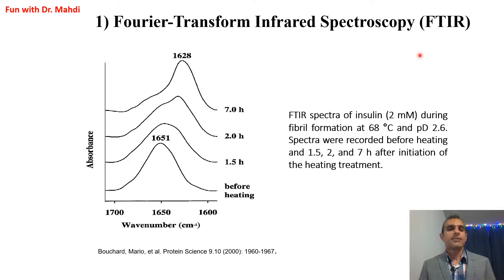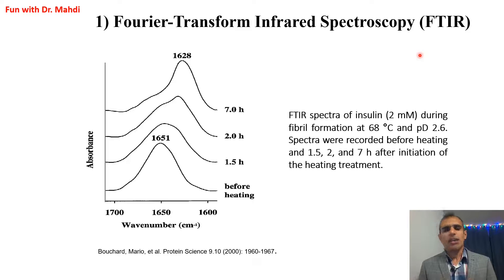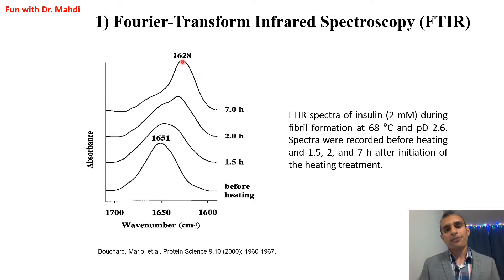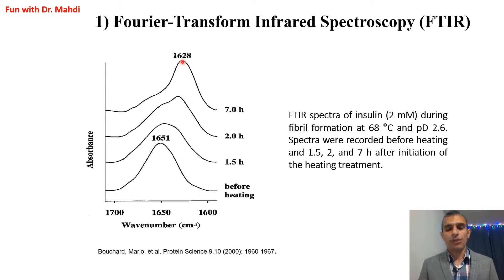To produce amyloid in the lab, you can adjust different parameters — for example, increasing the temperature, changing the pH, or using cations or salt. In this study, they increased the temperature for insulin — a peptide hormone — to 68°C. After seven hours, a new peak appeared at 1628 cm⁻¹, indicating amyloid formation. With FTIR, a new peak at 1628 confirms the presence of amyloid.